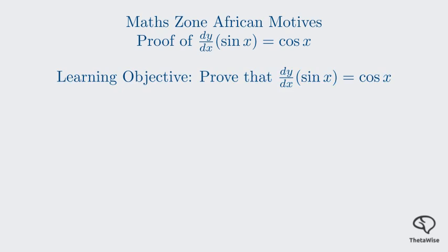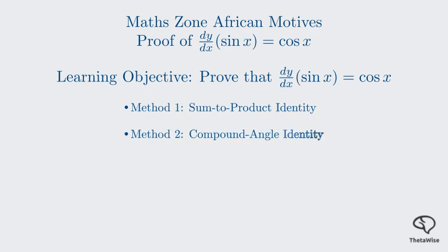The first one uses a sum-to-product trigonometric identity, and the second uses a compound angle identity. Both methods will lead us to the same elegant result, but they provide different perspectives on how to arrive there. Let's get started.